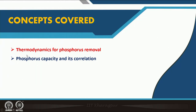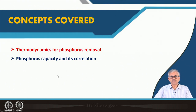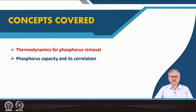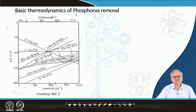The concepts covered include the thermodynamics of phosphorus, the phosphorus capacity, and its correlations — which are very important. Phosphorus capacity defines how effective the slag is at holding phosphorus, and how it correlates with different parameters. We will discuss the basic thermodynamics of phosphorus removal.